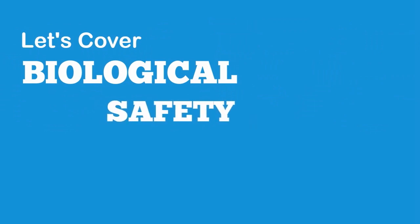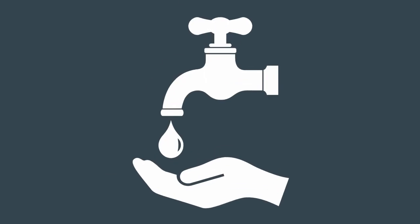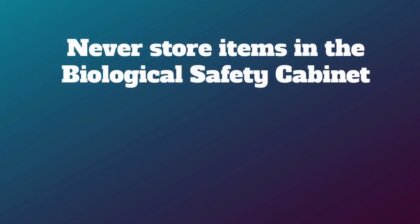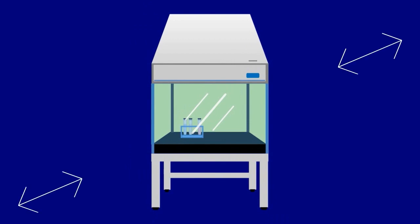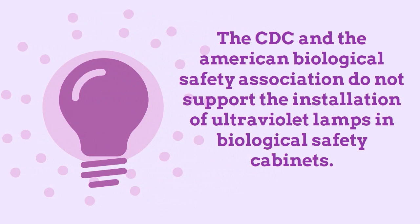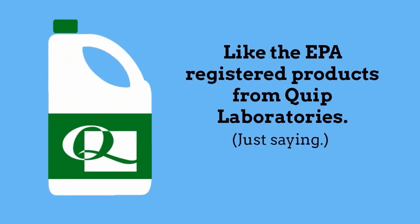Lastly, we need to cover biological safety cabinets. No matter what kind of biological materials you're handling, you should always remember to wash your hands completely with an iodine hand soap before and after using a biological safety cabinet. Make sure you never store items in the cabinet, such as pipettes and gloves, and don't forget to disinfect all work surfaces before and after using the BSC, as well as disinfect all items that go into and come out of it. It's also worth mentioning that although they've shown to be effective in limited capacities, the CDC and the American Biological Safety Association do not support the installation of ultraviolet lamps in biological safety cabinets, as these lamps can provide a false sense of security since they are not registered by the EPA and cannot guarantee their efficacy in the same way as a chemical disinfectant.